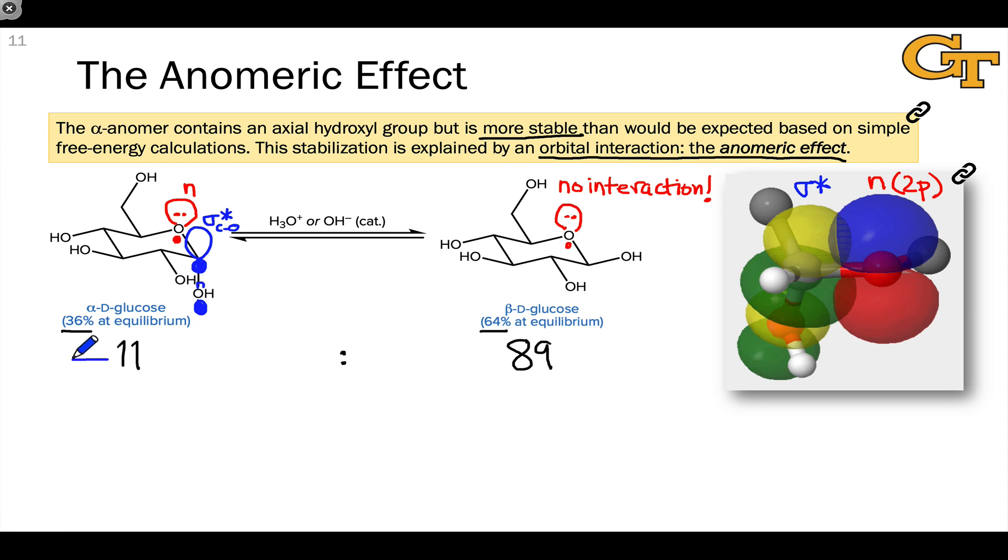The experimental evidence that stabilization is coming into play is the fact that we observe more of the alpha anomer, 36%, than we would expect if that interaction were turned off, in which case we would only see 11% of the alpha anomer.